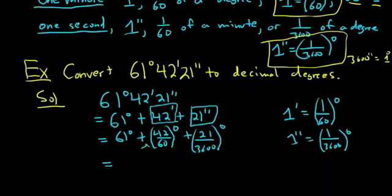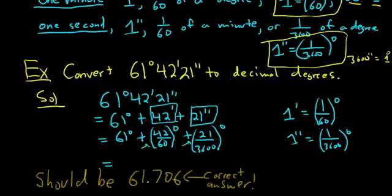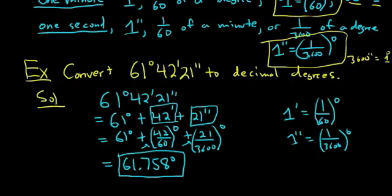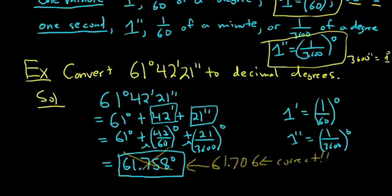This is equal to, putting all of this in the calculator, just typing this in as a fraction, you should get 61.705 degrees and that's it. I hope that made sense, we'll continue this series in the next video, thanks for watching.